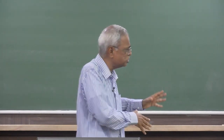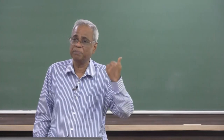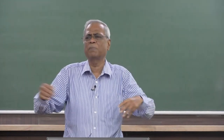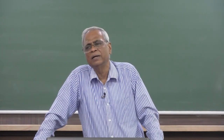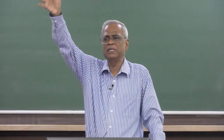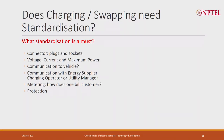Similarly, communication with the energy supplier is important. If there are lots of chargers drawing lots of power, it may impact the grid — so communication with the utility saying 'I am charging this much, is it okay to take this much current?' is necessary. Metering is also essential — the only way to bill the customer — and a minimum level of protection must be put in. This is what is required in any charger. In India, we have not standardized these things in four or five years — different people want to standardize differently, and the reason is they want to delay electric vehicles.